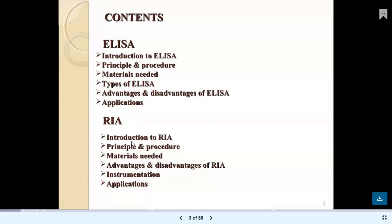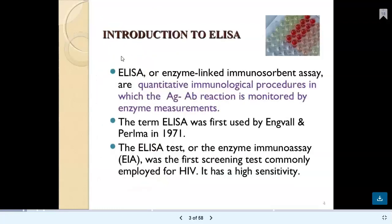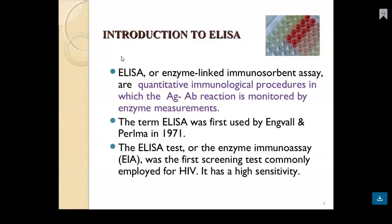For ELISA, we will cover introduction, principle and procedure, materials required, types of enzyme-linked immunosorbent assay, advantages and disadvantages, and applications. After that we will see radio-immunoassay, covering introduction, principle and procedure, materials required, advantages and disadvantages, instrumentation, and applications.